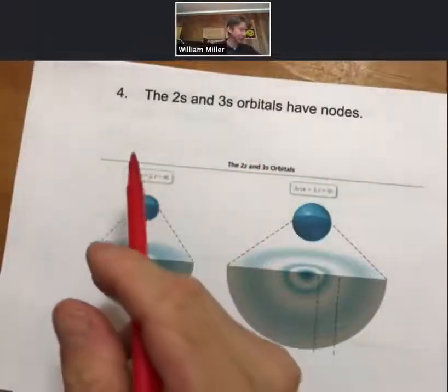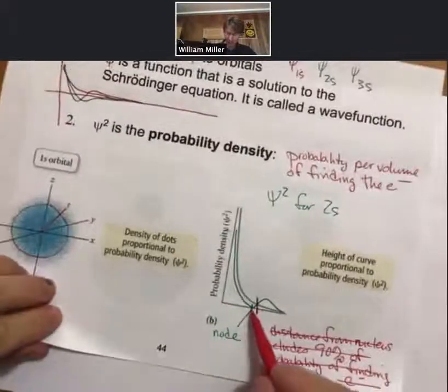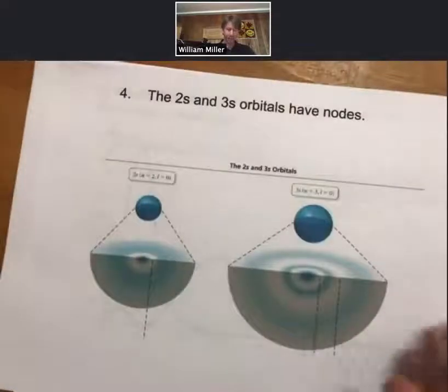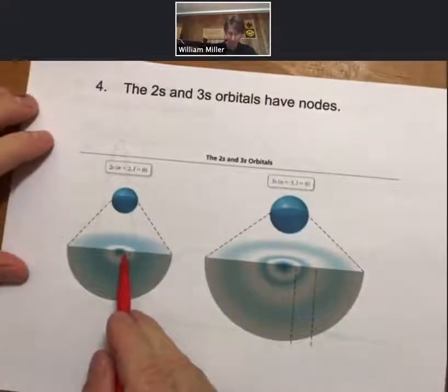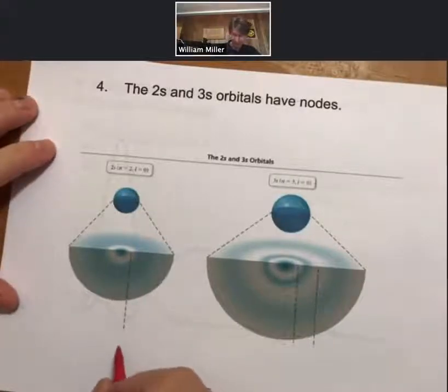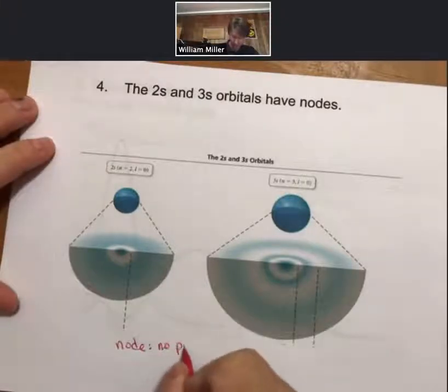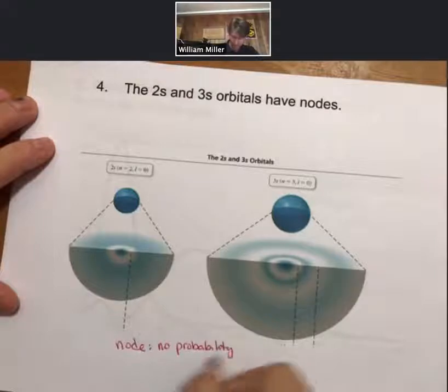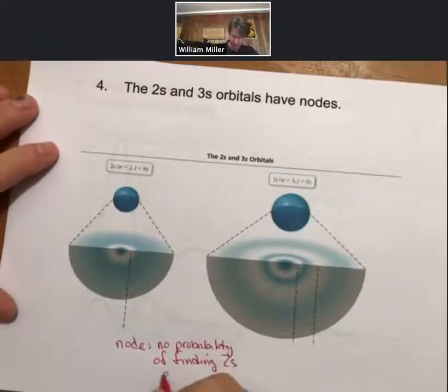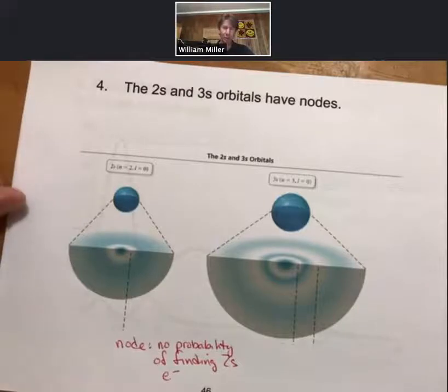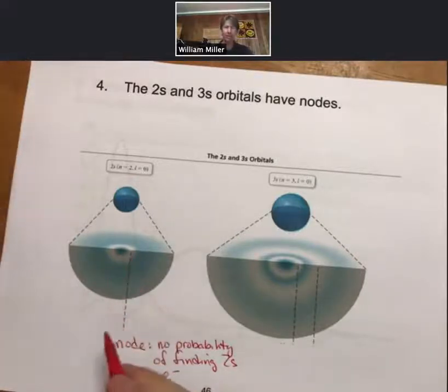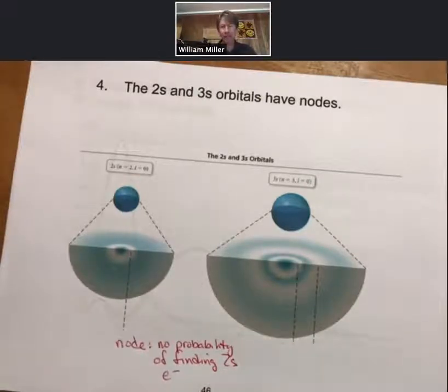Now, as I drew in a previous slide, and I said that 2s had a node. Nodes, for 2s, there's going to be a node. And that is a place with no probability of finding the 2s electrons. So the electrons in the 2s orbitals. And that's actually going to be where, more or less, you're going to find the 1s electrons. And so you can think of the nodes here as sort of optimized to keep the electrons apart.